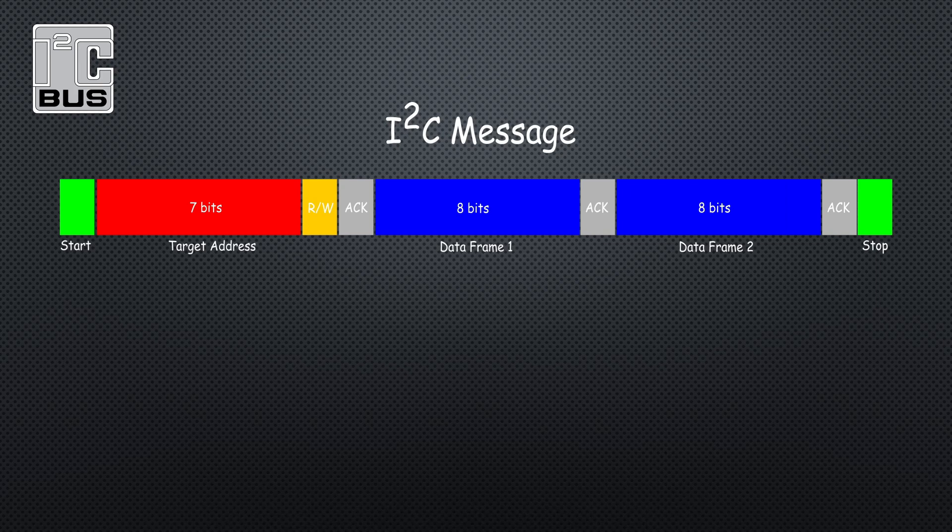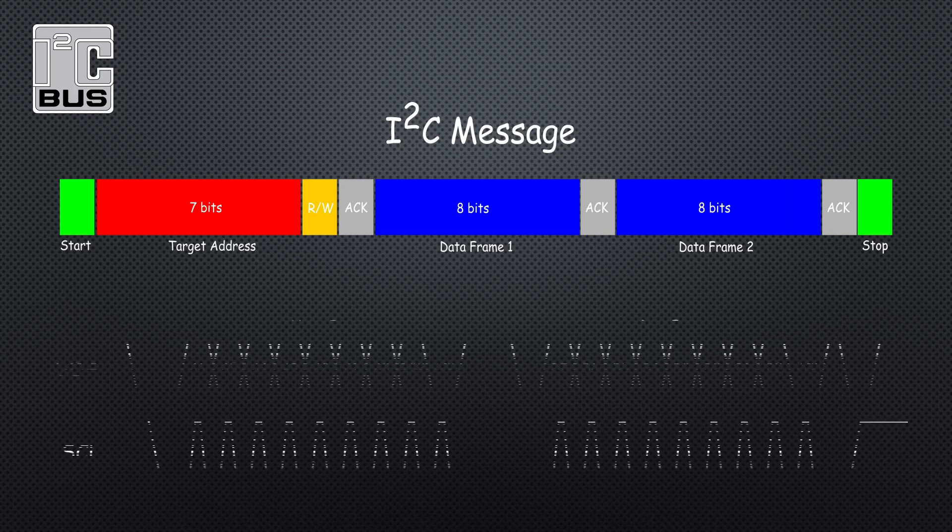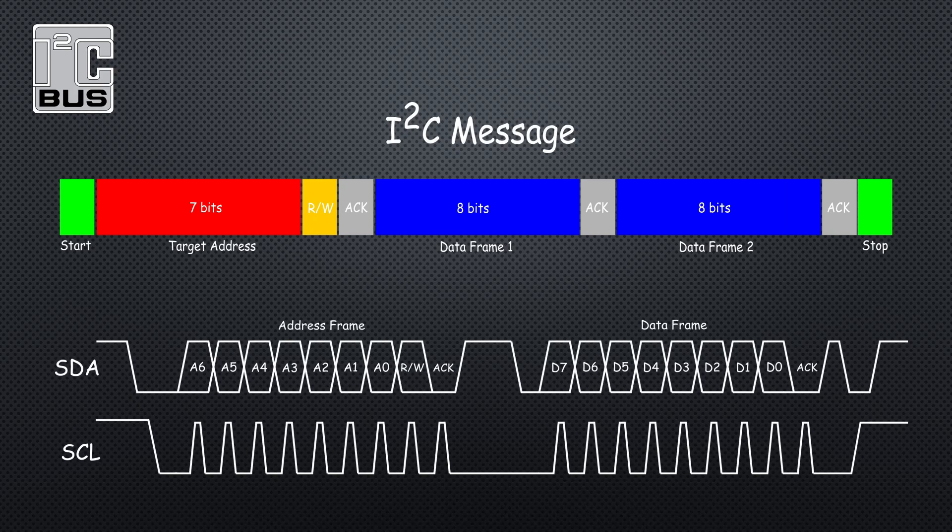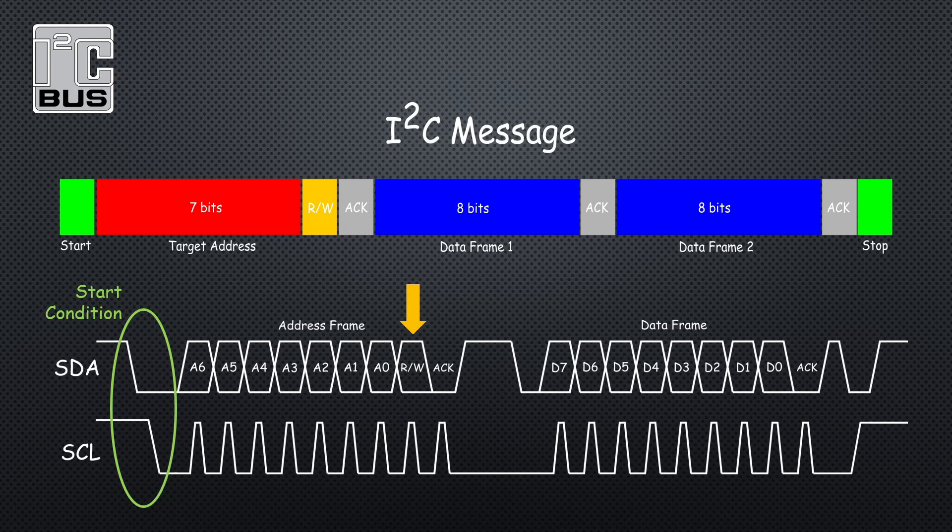In terms of timing, the start condition is indicated by the master when it pulls the data line low before it pulls the clock low. Both these lines will be high when at rest. The seven-bit address is clocked through, and the read/write bit will be a one if the master is requesting data or zero if the master is sending data. The master releases the data line for the slave to pull it low for the acknowledge. The data frames are then clocked through with an ACK between each frame.